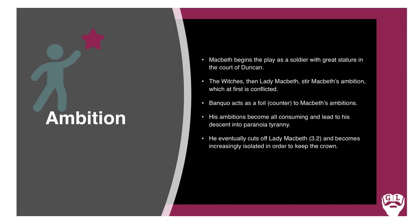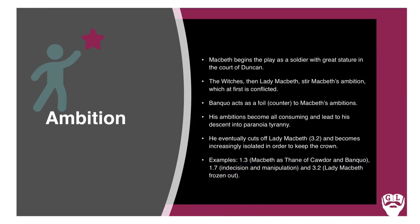One of the most pivotal plot points in the entire play is in Act 3 Scene 2 when Macbeth cuts Lady Macbeth out — she does not know about and is not involved in the planned murder of Banquo. He becomes increasingly isolated in order to keep the crown, creating a division between them that is irreparably damaged. Key scenes include Macbeth learning he's Thane of Cawdor alongside Banquo's reception of the witches' prophecies, then Macbeth's indecision manipulated by Lady Macbeth in Act 1 Scene 7, and Act 3 Scene 2 where she is frozen out.